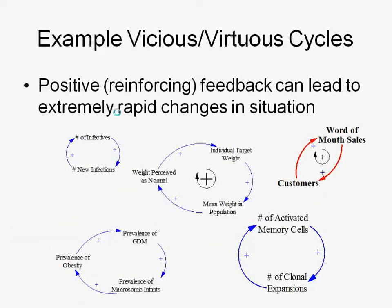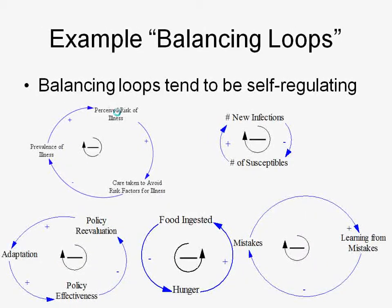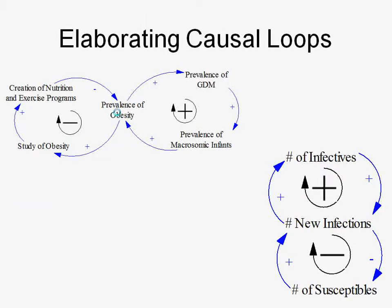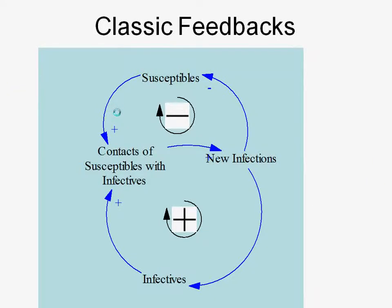So: positive feedback — reinforcing, unstable. Negative feedback loops — stable. These loops don't operate in isolation; they're linked together. When it comes to infectious diseases, we have competing loops — rapid increases in infectives early on, but then we're also depleting the susceptibles. Eventually the balancing loop catches up and pulls the system back to a new equilibrium.